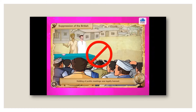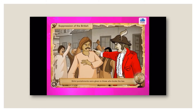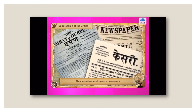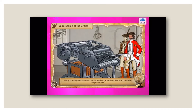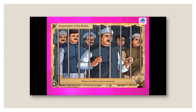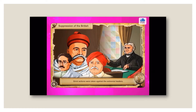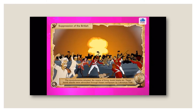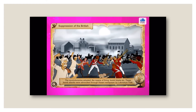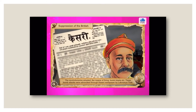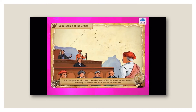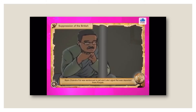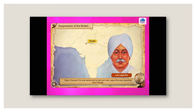Holding of public meetings was legally banned. Strict punishments were given to those who broke the law. Schoolchildren were also beaten up. Many restrictions were imposed on newspapers and many printing presses were confiscated on grounds of criticising the government. Writers and editors were imprisoned. Strict actions were taken against the extremist leaders. This led to a severe reaction in Bengal. The revolutionaries adopted the means of firing, bomb blasts, etc. These bomb attacks were advocated through the Kesari newspaper by Lokmanya Tilak. The charge of sedition was put on Lokmanya Tilak, for which he was sent to Mandalay Jail in Myanmar for six years imprisonment. Bipin Chandra Pal was sentenced to jail and Lala Lajpat Rai was deported from Punjab.